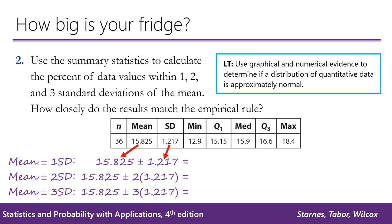First, we're going to calculate the boundaries for 1, 2, and 3 standard deviations above and below the mean by taking the mean and adding and subtracting 1 standard deviation, 2 standard deviations, and 3 standard deviations. So for 1 standard deviation, what we're doing is 15.825 minus 1.217 to get the lower boundary, and then we're taking 15.825 and adding 1.217 to get the upper boundary. We repeat this for 2 standard deviations and 3 standard deviations.